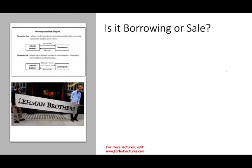Today we're going to be talking about de-recognition of receivable. The first thing I want you to think about is a company called Lehman Brothers when you think about de-recognition of a financial asset. De-recognition is when we remove an asset from the balance sheet. We have to know: did we sell it, or is it used to borrow money?